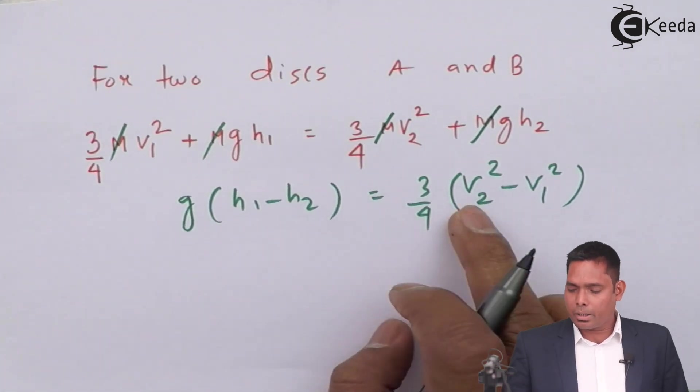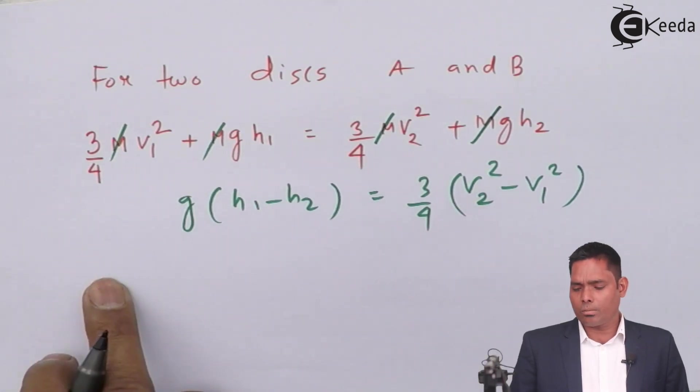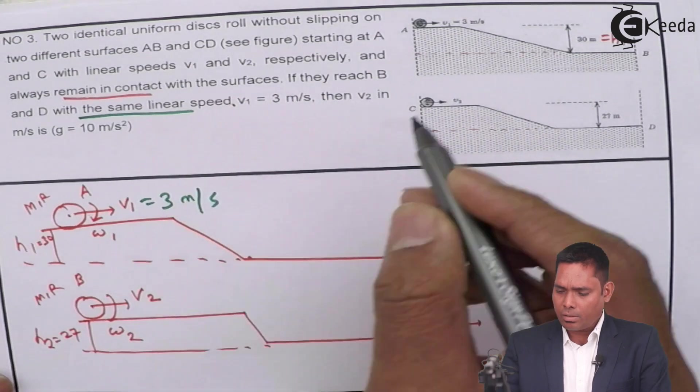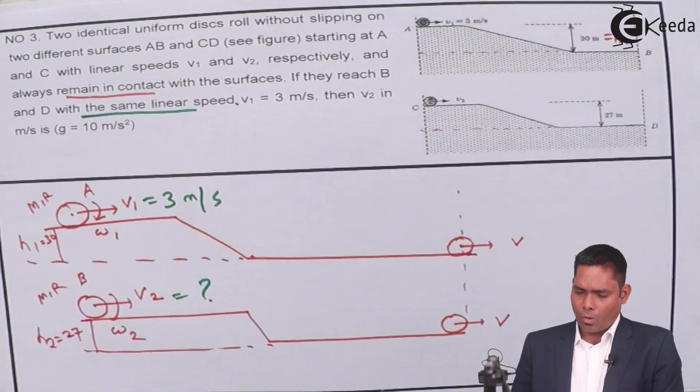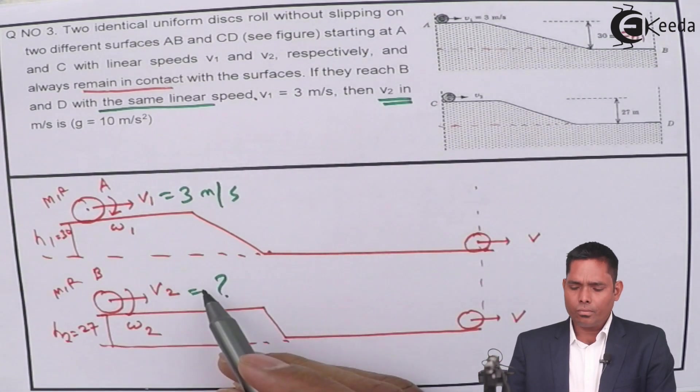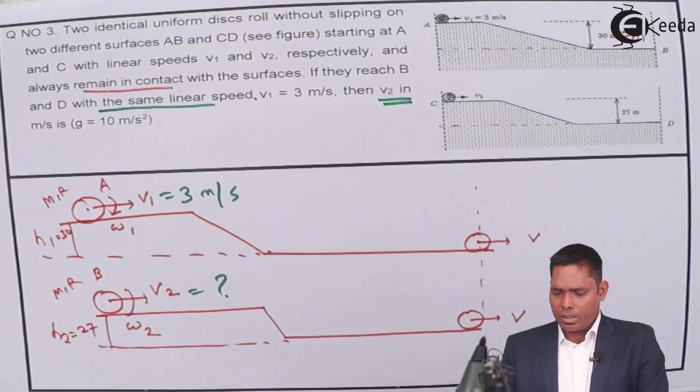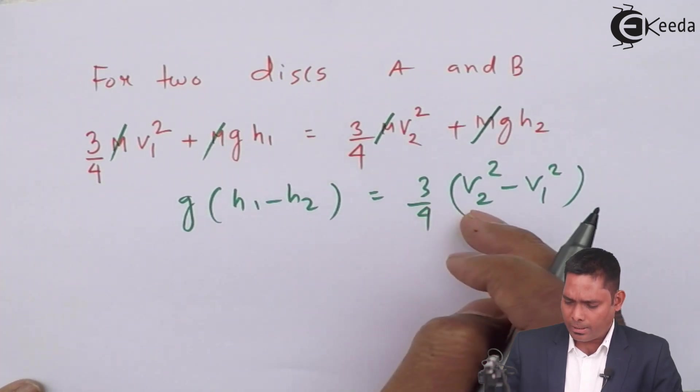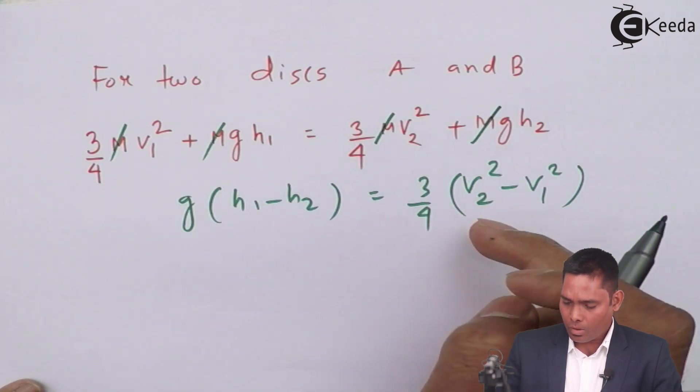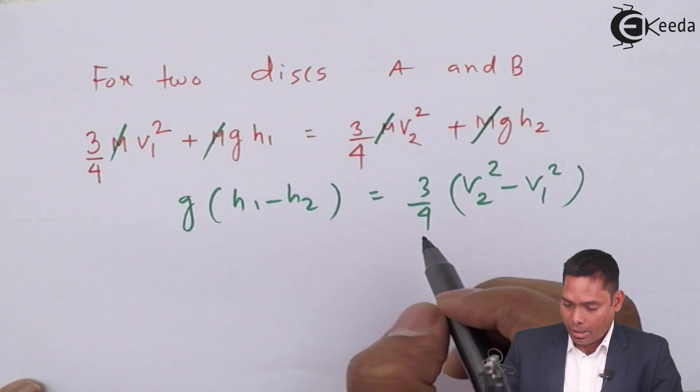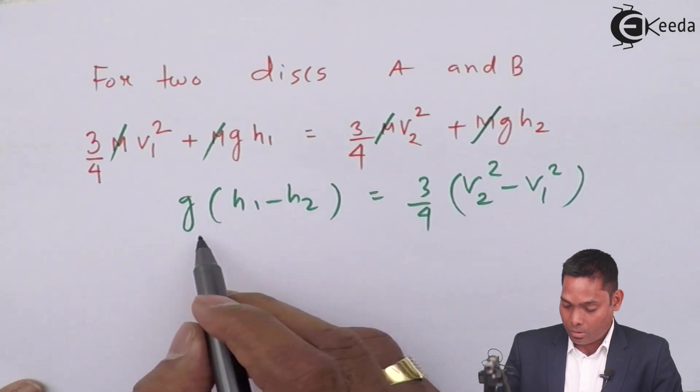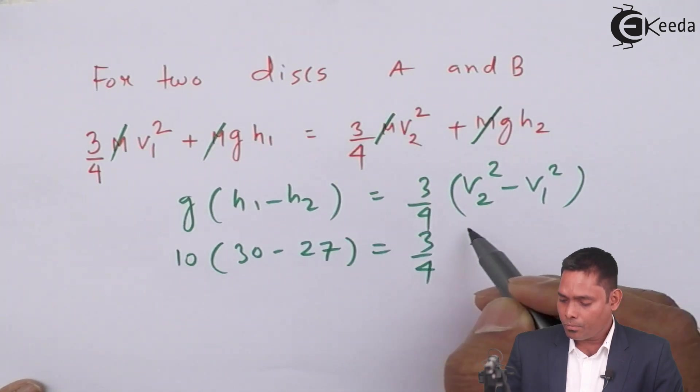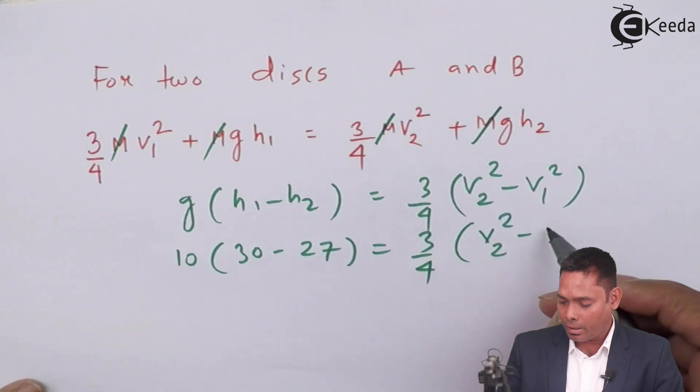Because this is positive, this will be greater. So V2 is greater than V1. If V1 comes with 3 meters per second as given in the question, this is not given, it is asked. What is the velocity of V2? This is at a lower height. Now this is greater. V2 should be greater as shown. Let us say this is 10, and H1 is 30 minus 27, this is 3/4 V2 squared and V1 is 3.